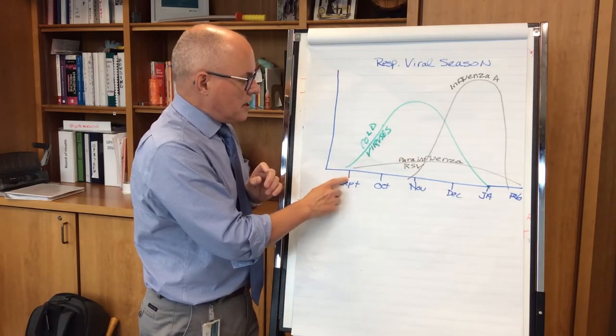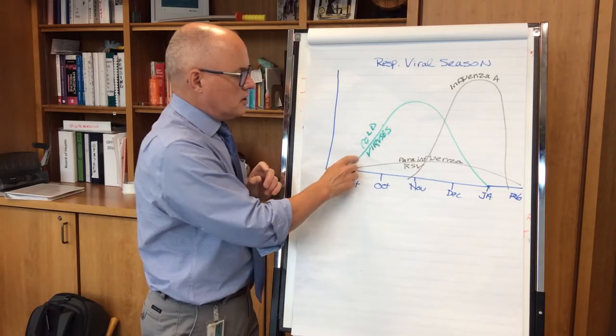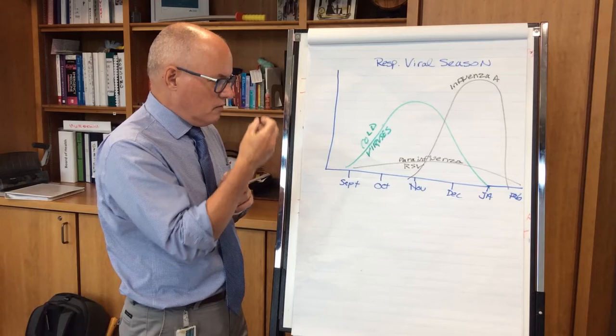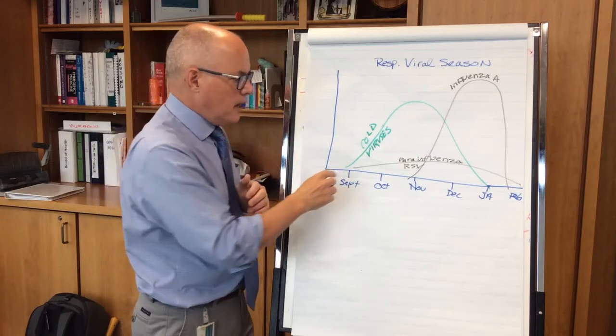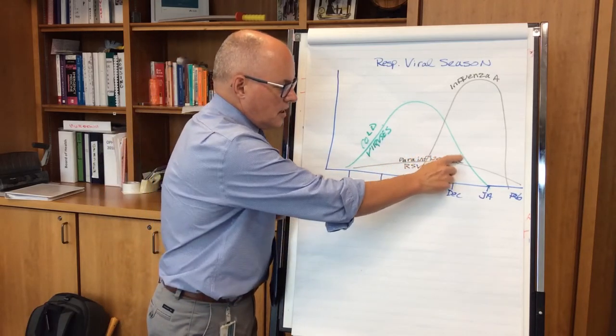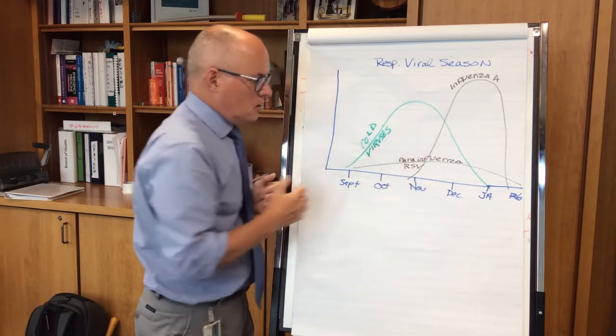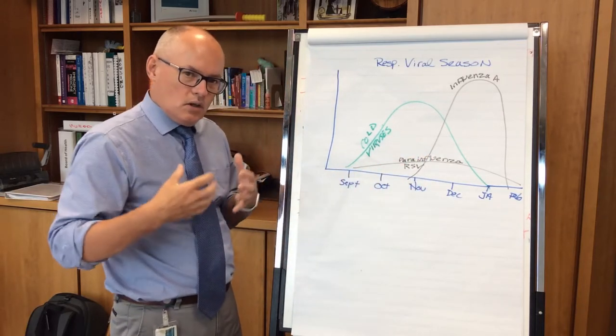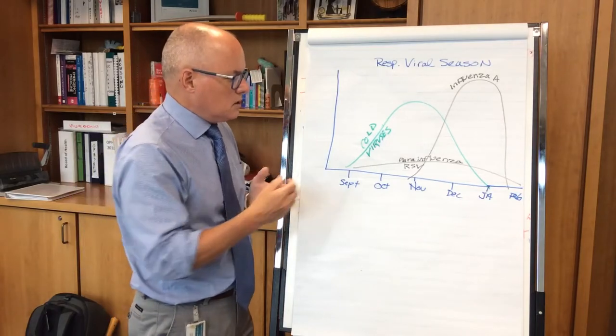Typically in the beginning of September when children return to school, we start to see cold viruses circulating—runny nose, fever, achiness, and sometimes sinus pain. We then see the common croup viruses called para-influenza and a bug called RSV, which causes the small tubes of children's lungs to get plugged up.